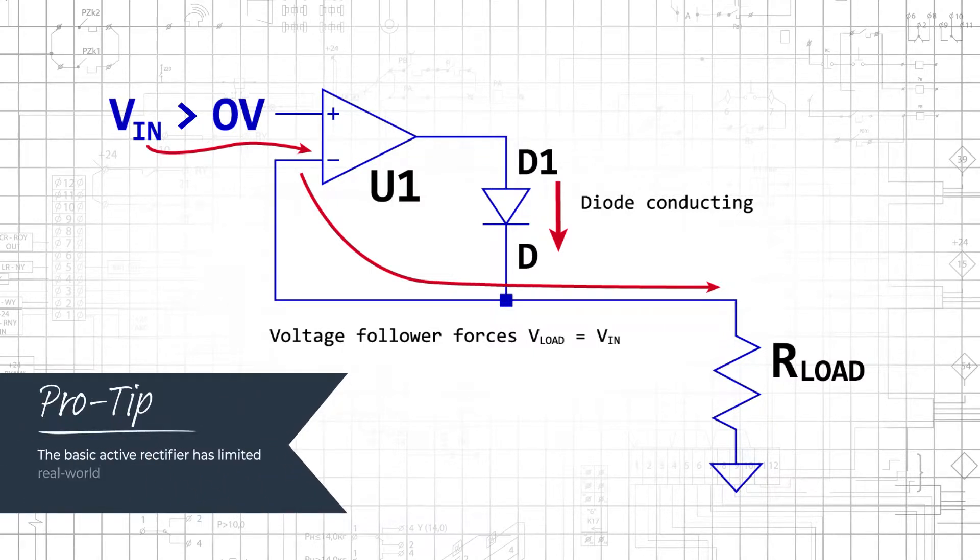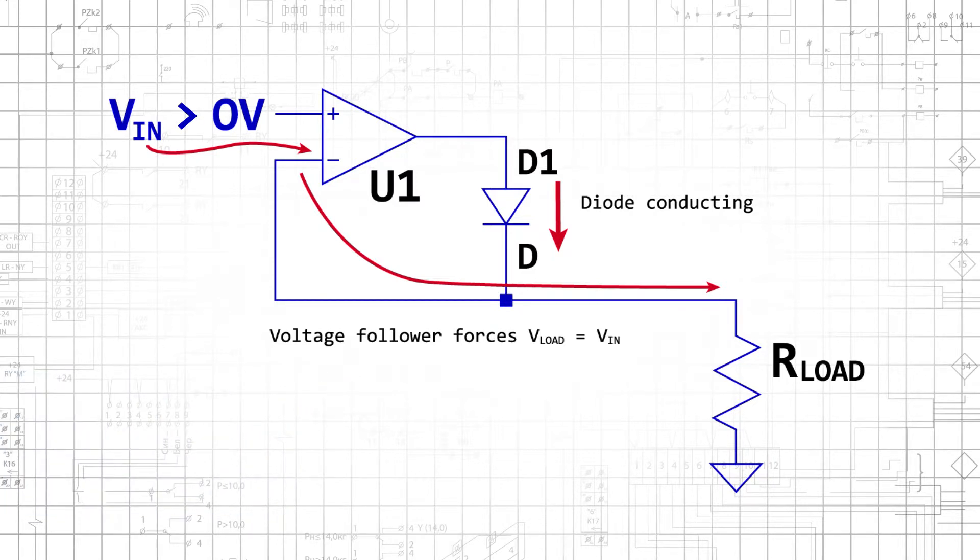The basic active rectifier has limited usefulness in real life circuits because it relies upon output saturation. When the input voltage is below zero volts, the diode is an open circuit and there is a negative differential between the op amp's input terminals, which results in the output being driven to the negative supply rail. This is generally undesirable and will reduce the circuit's ability to rectify high frequency signals.